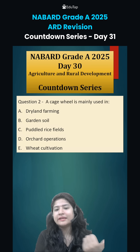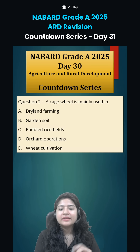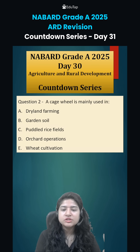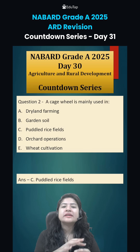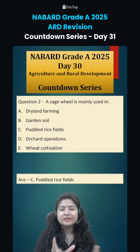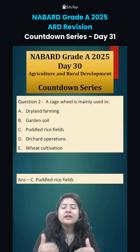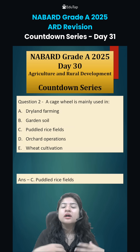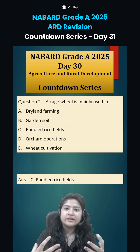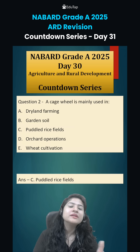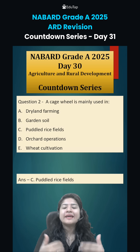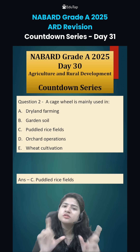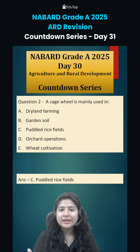Second, a cage wheel is mainly used in rice fields. Imagine a normal wheel made of a rubber tire — that cannot function in a rice field because the soil is very wet and the soil will stick to the tires. That is where cage wheels are used. A cage wheel is also in the shape of a wheel but it is made out of metal.